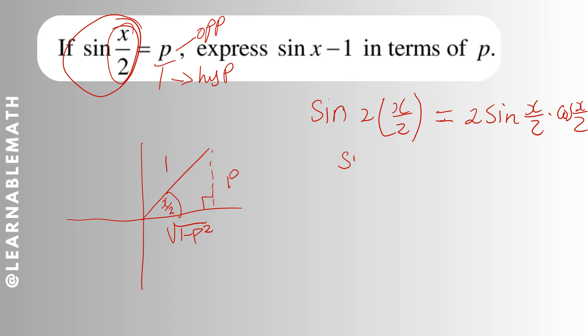If you simplify here, 2 times 2 will cancel and you have sin x = 2 sin(x/2) cos(x/2). We can express this in terms of p because we are told sin(x/2) = p. Then cos(x/2), the triangle helps you to get that cos(x/2) is adjacent over hypotenuse, which will be √(1 - p²) over 1, which will just remain √(1 - p²).